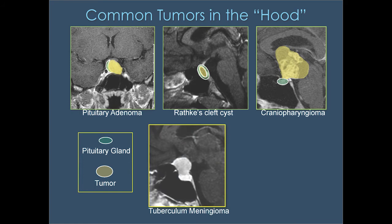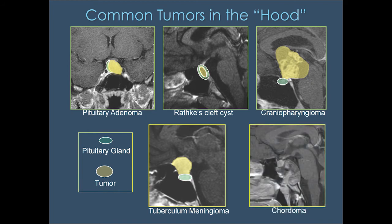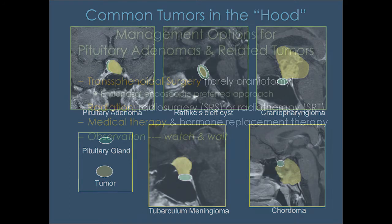Meningiomas come from the coverings of the brain and often push into this region, compressing the pituitary gland. They more commonly cause visual loss than pituitary problems. There are also skull base tumors called chordomas — a more malignant tumor that can get around and under the pituitary gland.